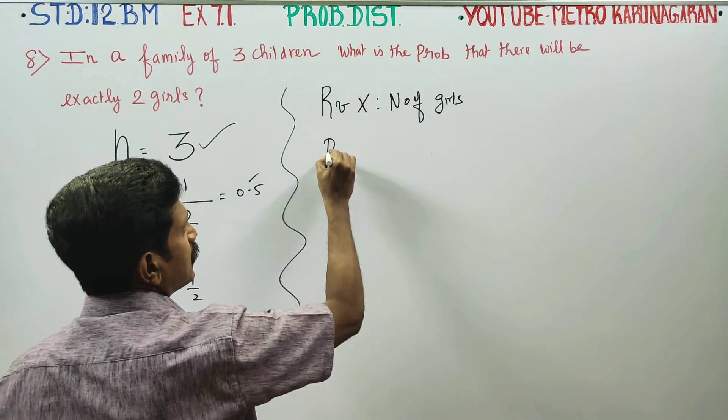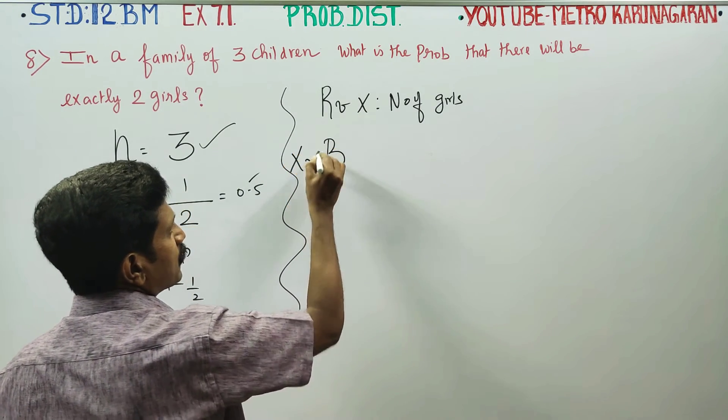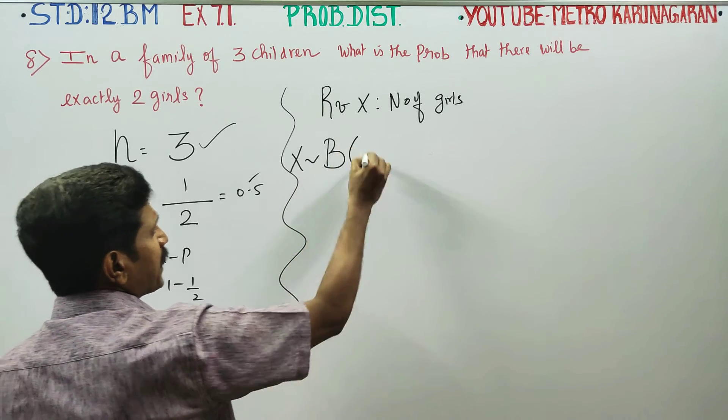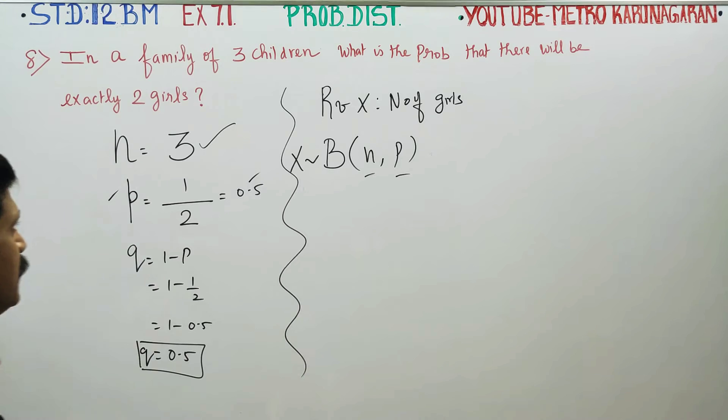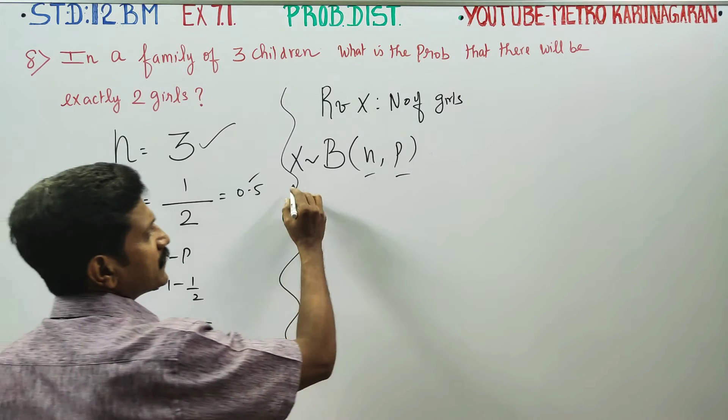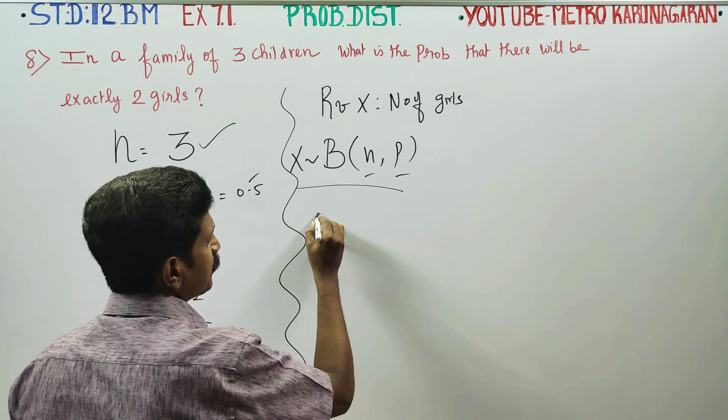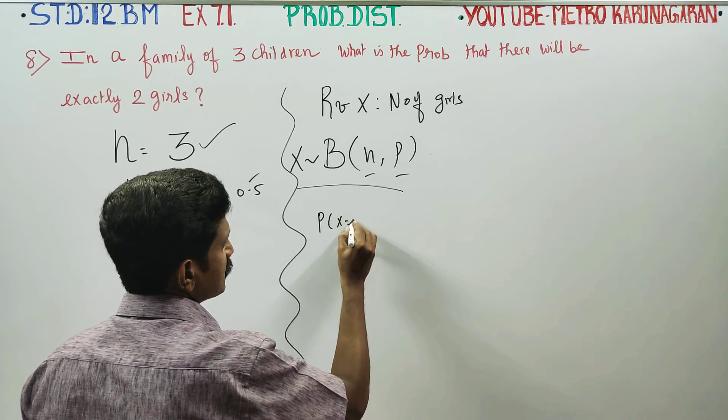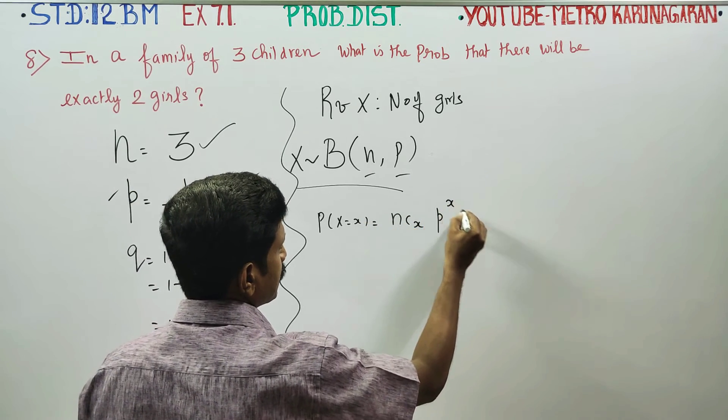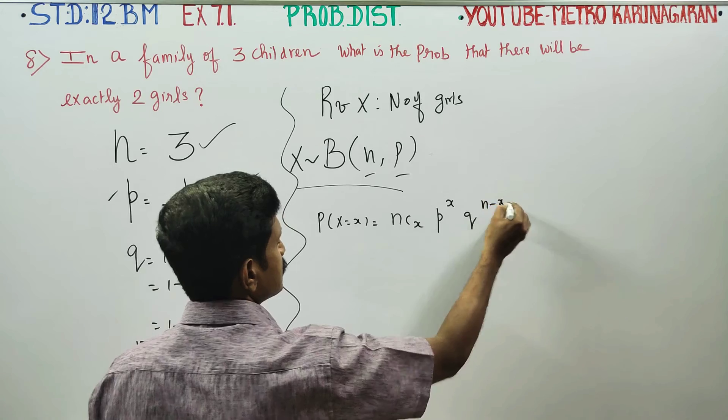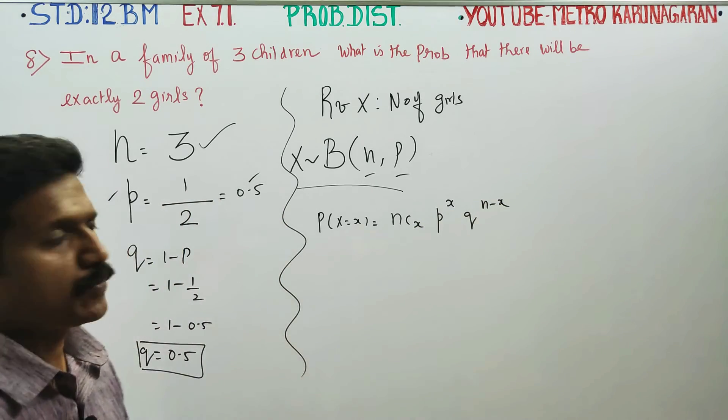Binomial distribution is used. x follows binomial distribution with two parameters, n and p. n is the number of children, and p is the success rate. Girl is success. This is the binomial formula: Probability of x is equal to nCx p power x q power n minus x.